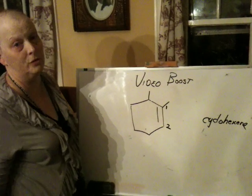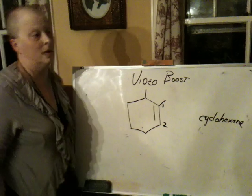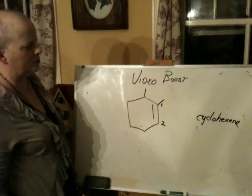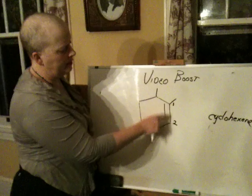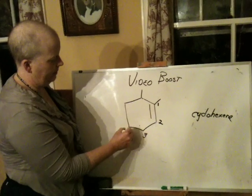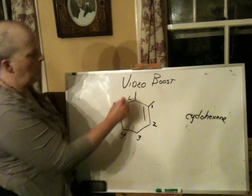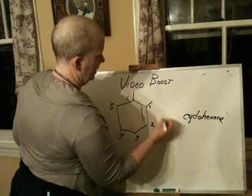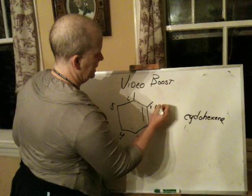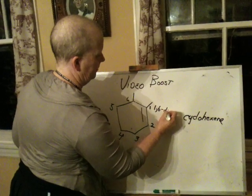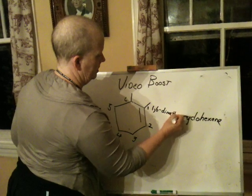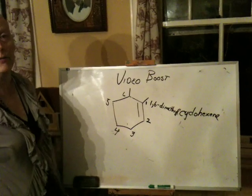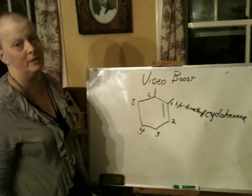I also know there are a couple of typos in the textbook on this topic. But I know this rule: you go one, two, three, four, five, six. So this is 1,6-dimethylcyclohexene instead of what you might want to do, which is 2,3-dimethylcyclohexene.